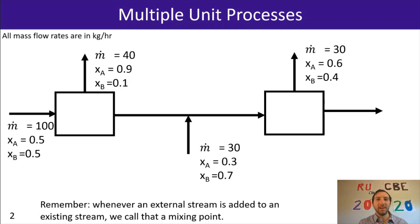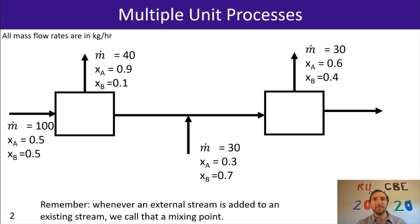We've got a few different streams going on, and I haven't numbered the streams just yet because we need to clean this process up before we can move forward and try to solve it. The reason we need to clean it up is that we've got something called a mixing point, where there's an intermediate stream connecting our two unit processes. We need to convert that so we can figure out how much material is actually going to be entering that second unit operation.